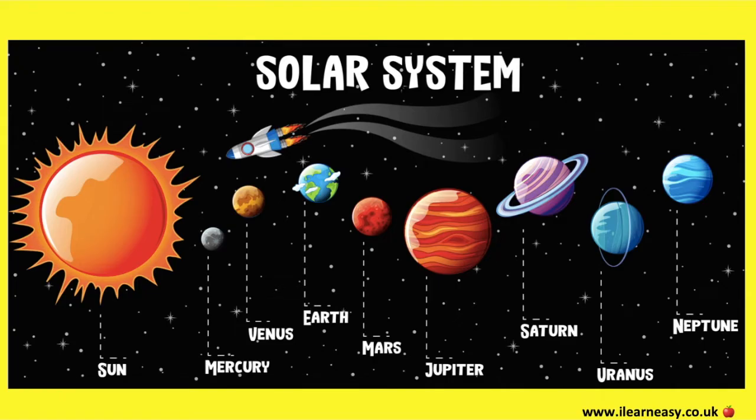There are eight planets in the solar system. The sun is a star, not a planet. It's at the center of the solar system. The sun gives heat and light to all the planets.